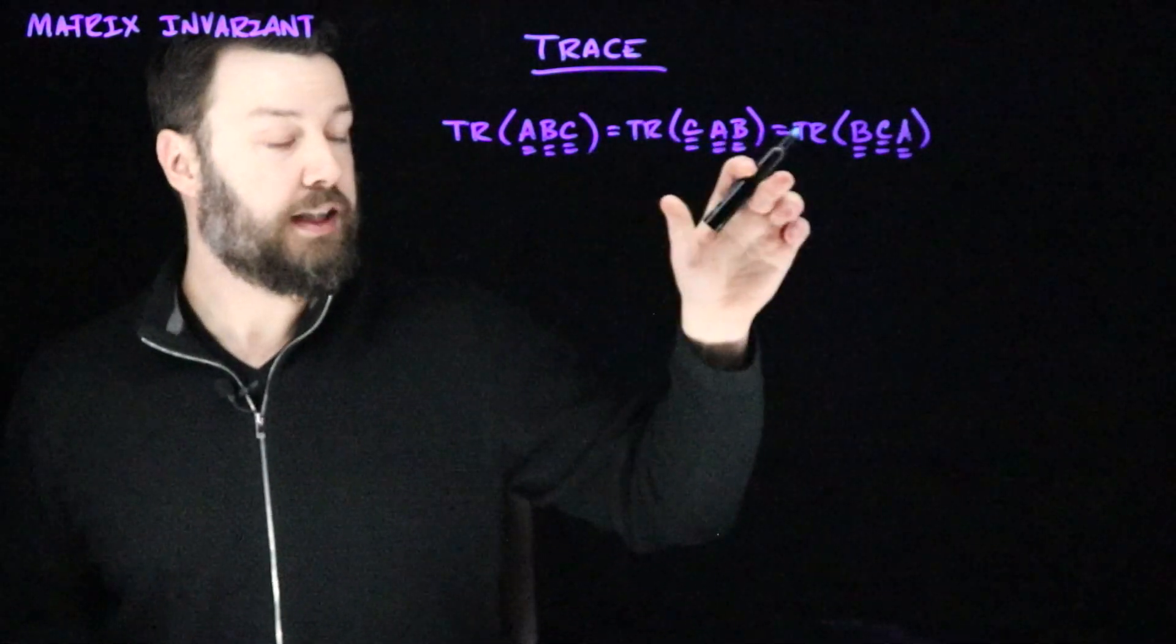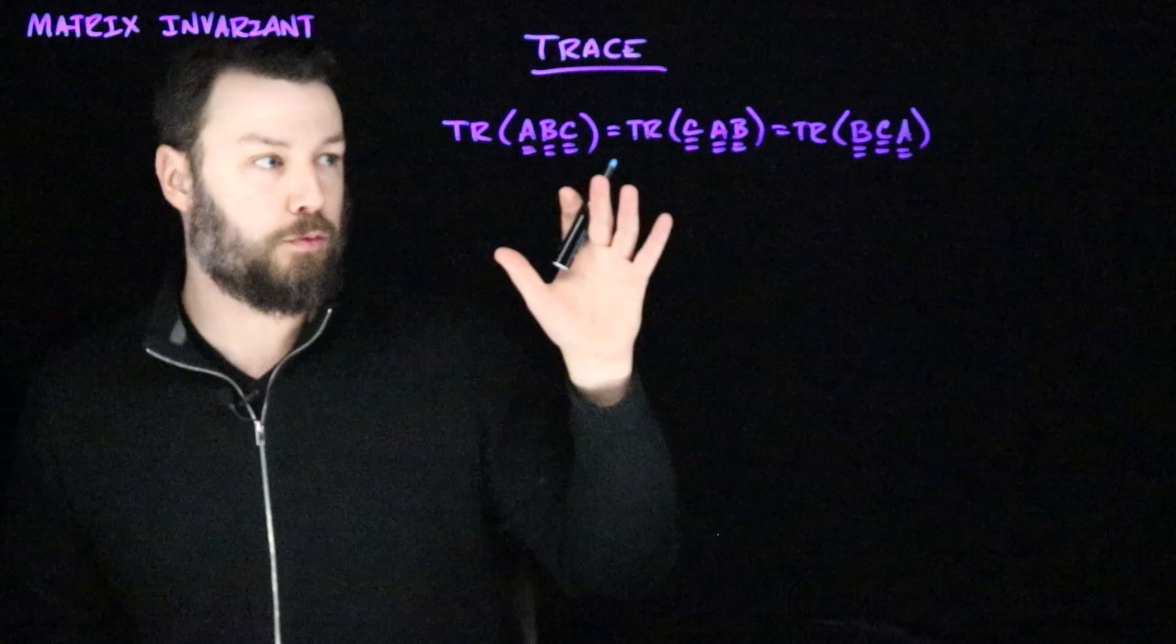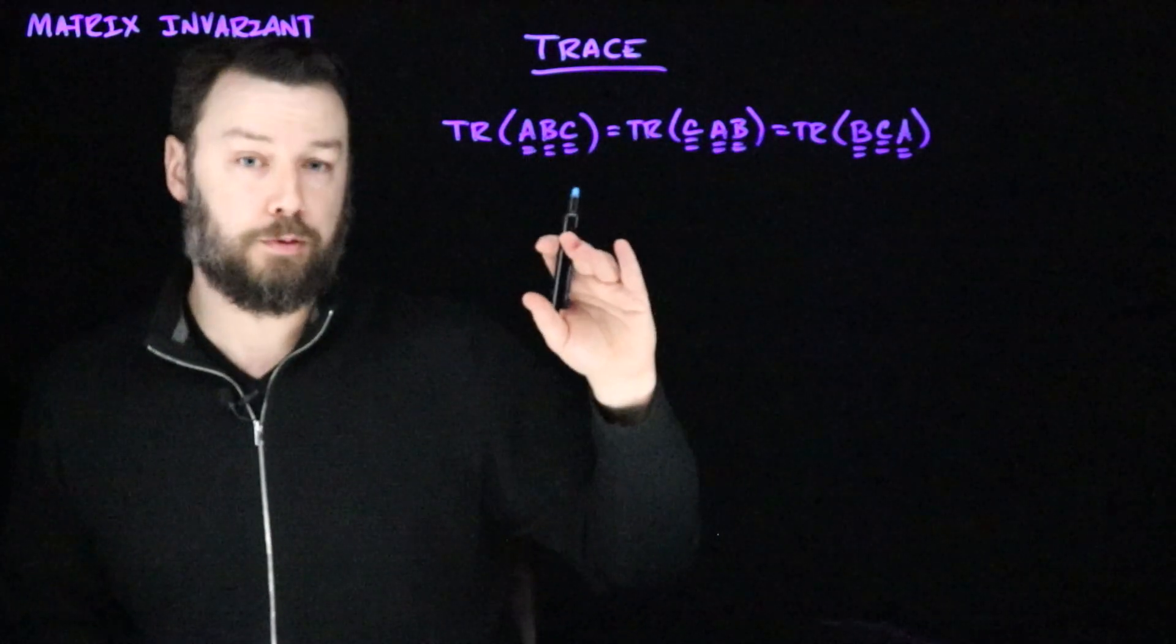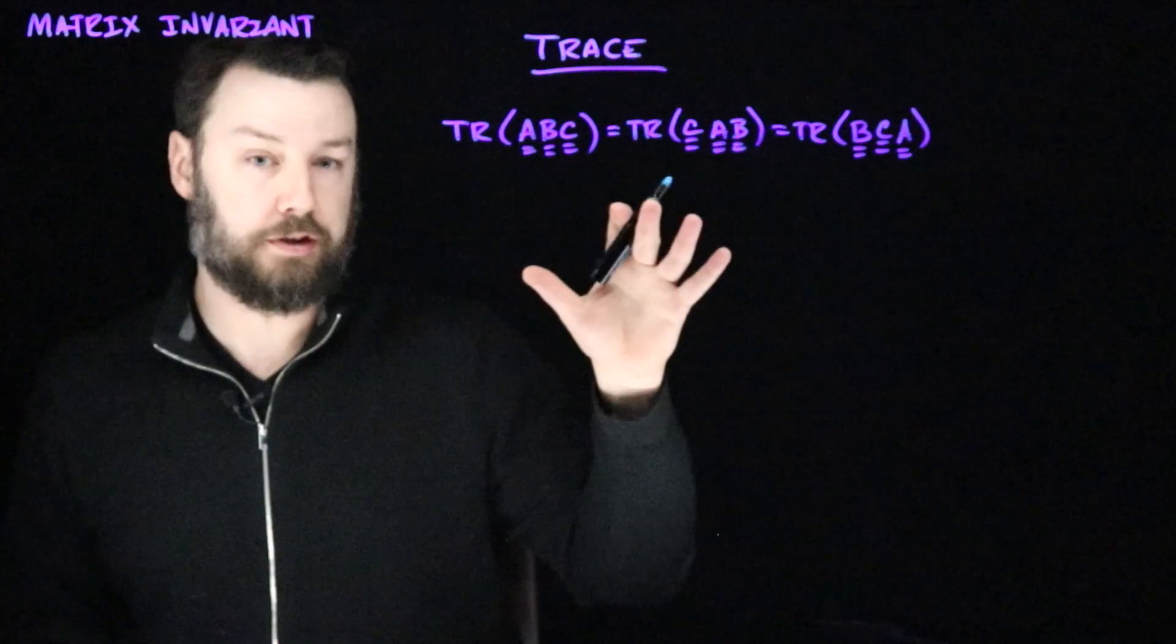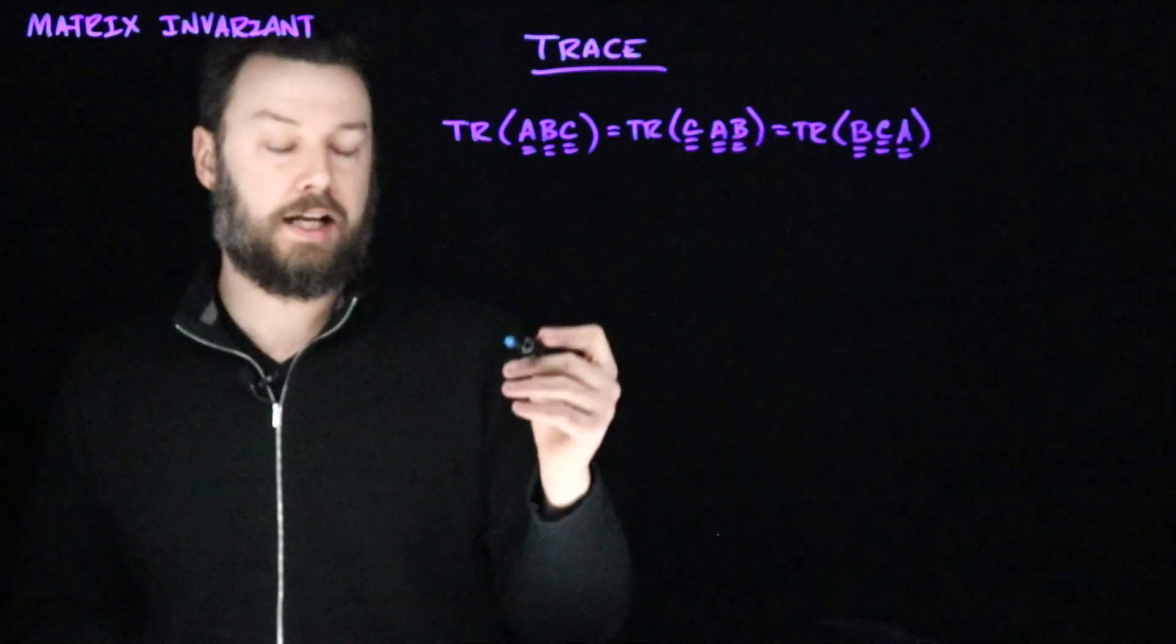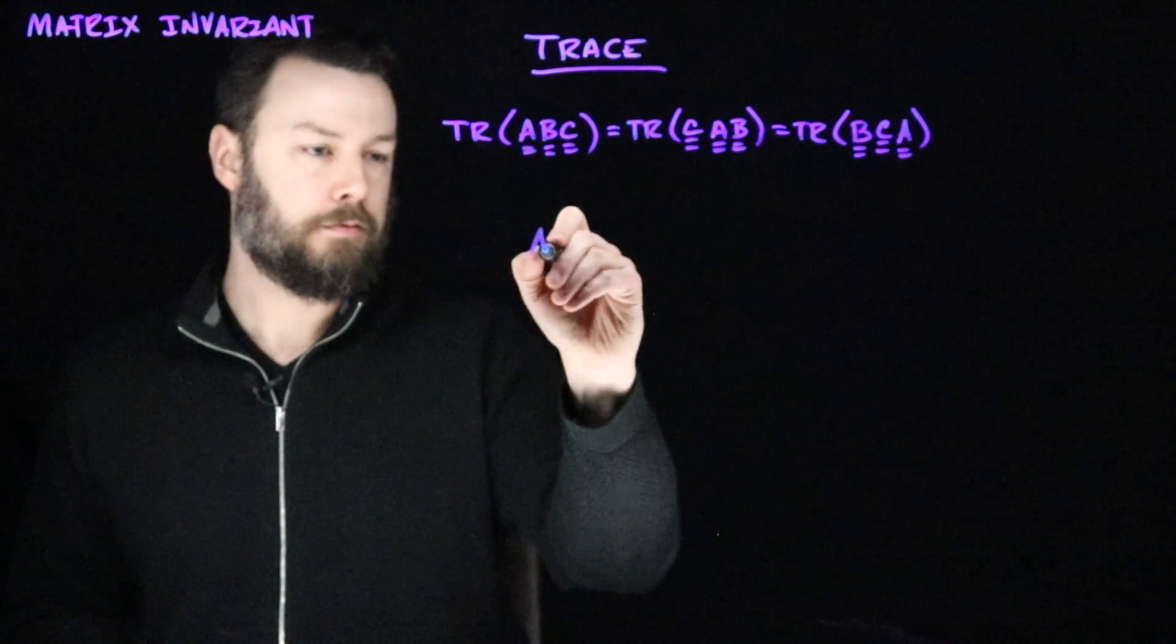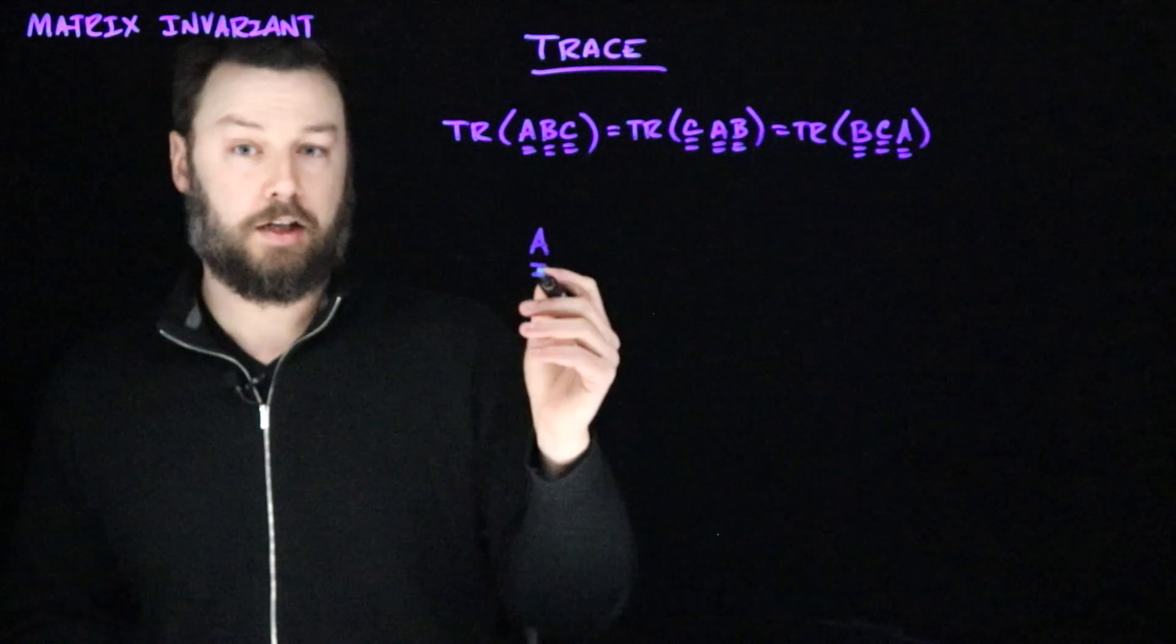So, this is a pretty interesting property. This comes up quite a lot, but one of the effects of this is it reveals to us what we mean by a matrix invariant. And so, let's imagine that we have some A and we care about its trace.